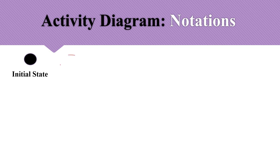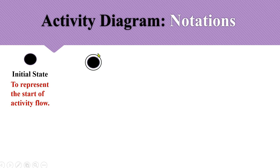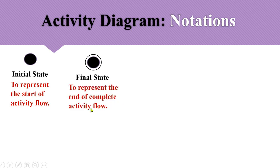Let's look at the notations. The first notation is the initial state. Unlike flowcharts where we use an oval to represent the start, in activity diagrams we use a small filled circle to represent the initial state — the starting point of the activity diagram. The next notation is the final state, represented by a double circle: an inner filled circle surrounded by a boundary circle.